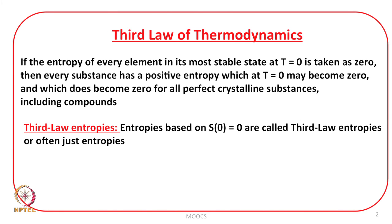In fact, the third law does not say that the entropy of all perfectly crystalline substances is equal to zero at absolute zero. It should be interpreted as meaning that the extent of order in all perfectly crystalline substances at absolute zero is the same, and taking this value equal to zero is just a matter of convenience. That is why for all perfectly crystalline substances we set S₀ = 0. In the previous lecture we discussed how to get the temperature dependence of entropies, and we discussed that entropy at any temperature can be calculated if we have the value of S₀.